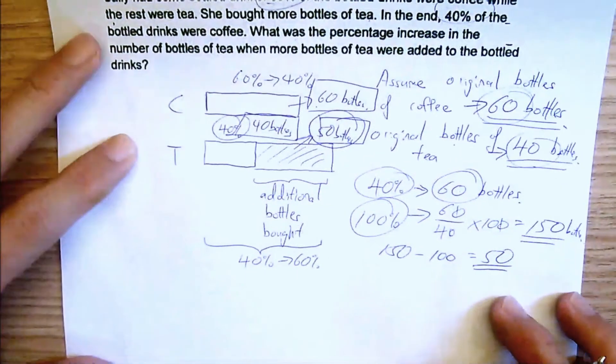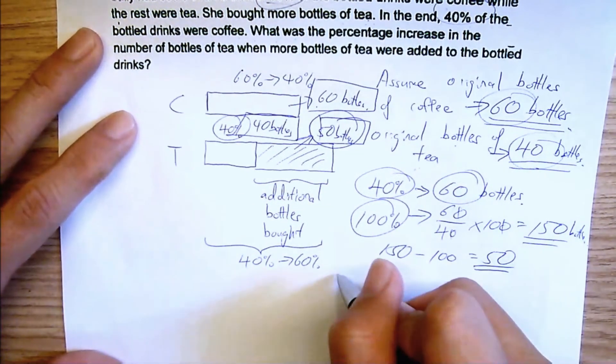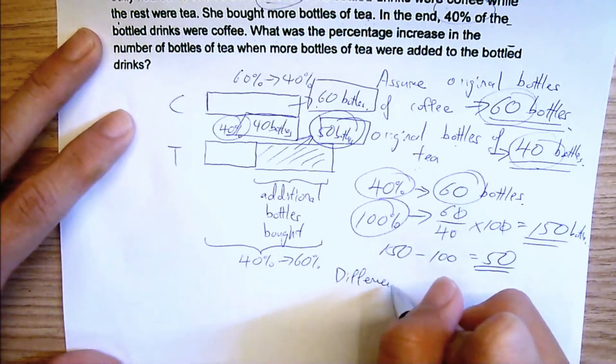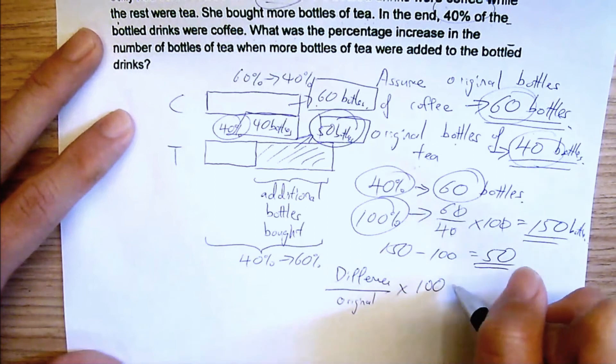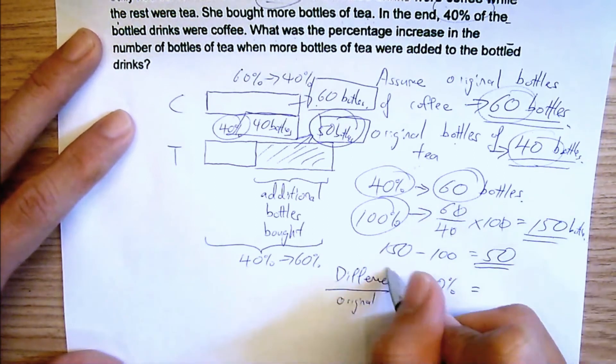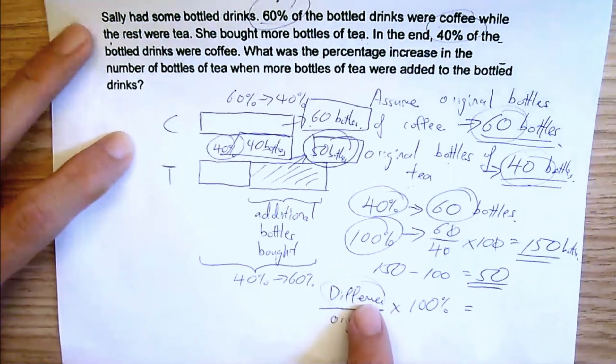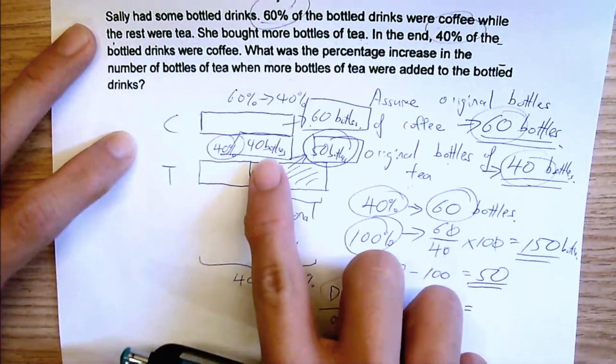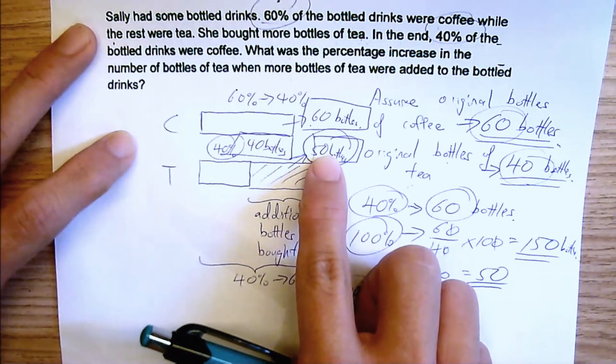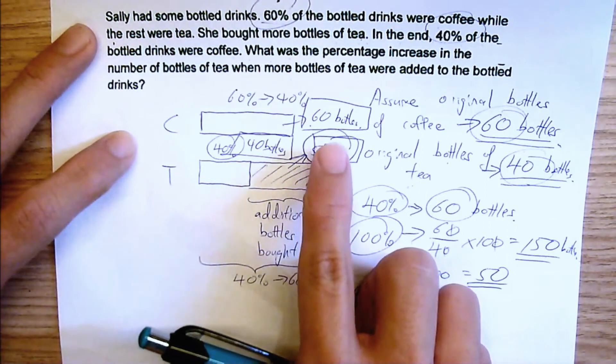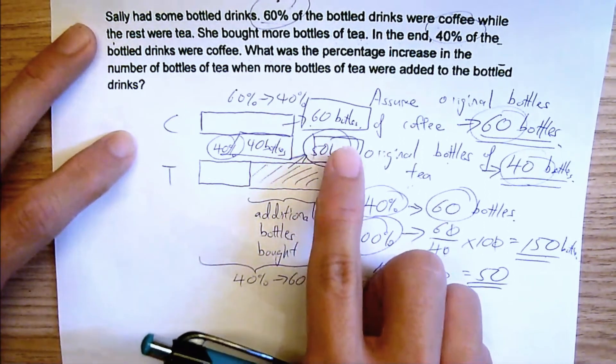If you do percentage increase, remember what I taught you previously. Percentage increase has always been difference over original multiplied by 100%. So what's the difference in the bottles of tea? The bottles of tea, originally, is 40 only. But now, it became 40 plus 50, so it's 90. So the difference would be this, 50. 50 is the additional bottles bought.